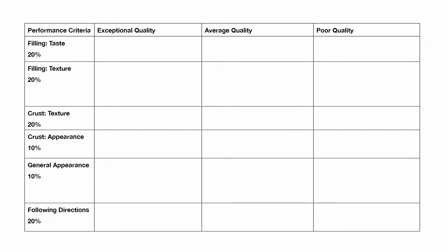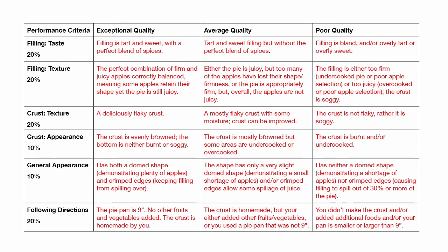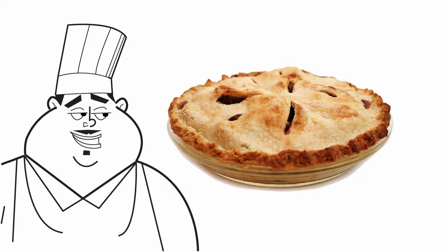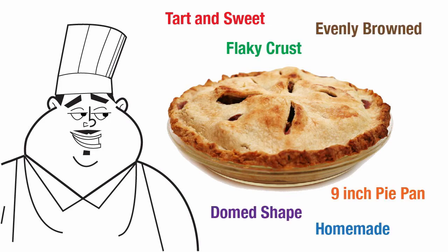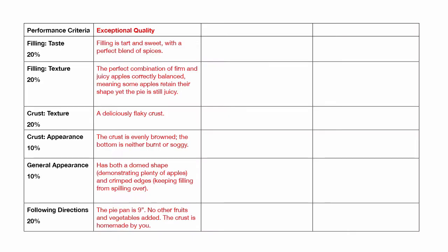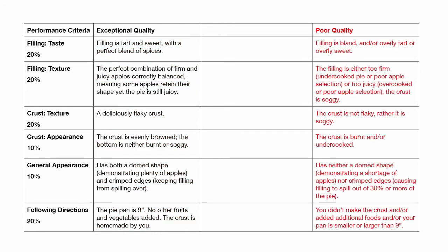The third part of the rubric is the range scale. These labels determine the level. In our example, the scale is exceptional quality, average quality, and poor quality. The fourth part is the individual descriptions within the grid. These descriptions describe what must be accomplished to achieve each level. Students can evaluate their own performance by measuring against these descriptions. Begin with the highest expectations, then the lowest expectations, and finally the range in between.